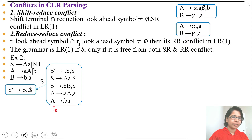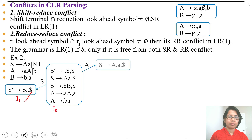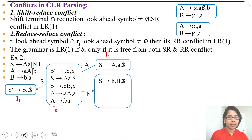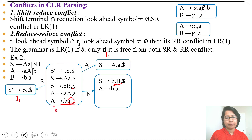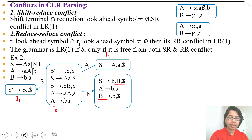From i0 by 'b', it goes to state i3 with LR1 items: S → b·B with lookahead dollar, and A → b· with lookahead a. There is a dot before variable B, so we add B productions. B → ·b with lookahead dollar (since after B nothing is present, FIRST(ε·dollar) = dollar), and B → ·a with lookahead dollar.